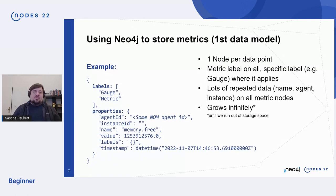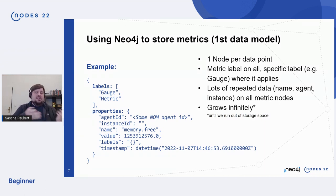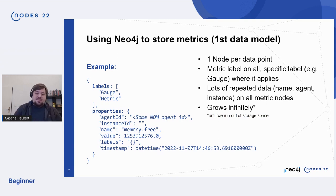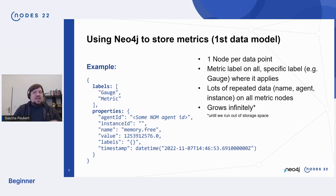You can see here in this JSON representation that we have labels — there's a metric label on all of them. There's an additional label telling you what kind of metric it is, so it's a histogram or gauge metric or whatever. And then there are certain properties: which NOM agent it's coming from, which instance it was on, obviously the name, the values, additional labels, the timestamp — really important. Pretty solid thing — the data model you would come up with first. You can see some of them are a bit repetitive. If you scale it up to millions of nodes, you'll have loads of nodes with the same instance ID — might be something you can optimize there.